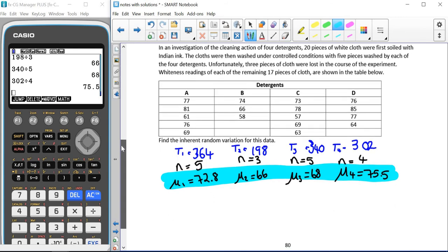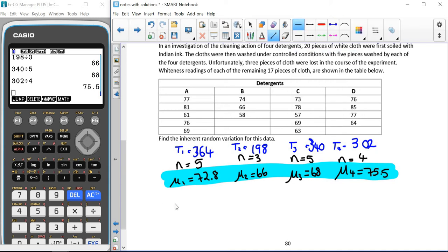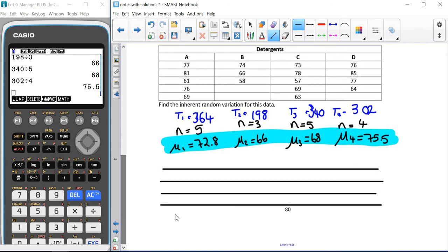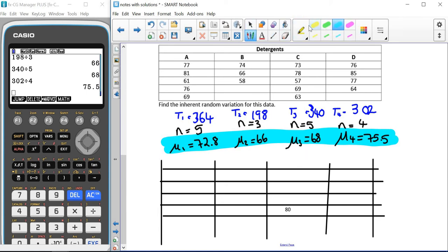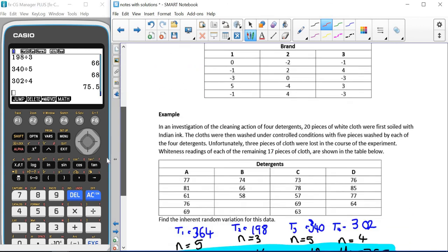Now, what we're actually trying to find is the inherent random variation of each piece of data. So we're going to have to make a quick table so that we can find all of our differences. We've got detergent A, detergent B, detergent C and detergent D. And just as we did up here, we're going to do the value of the table minus each of the means.